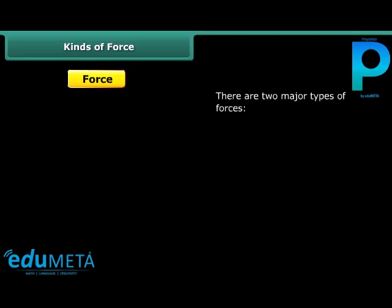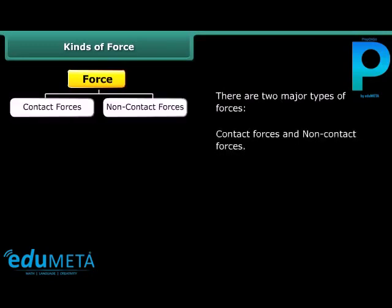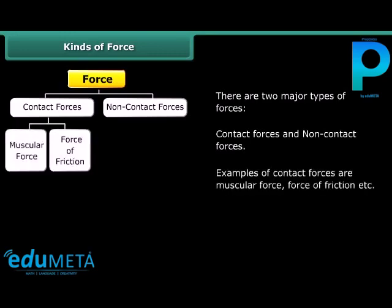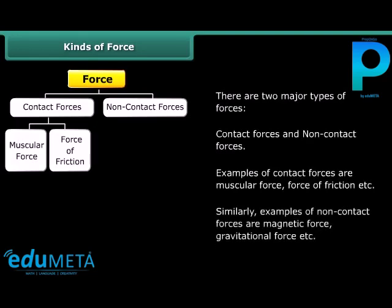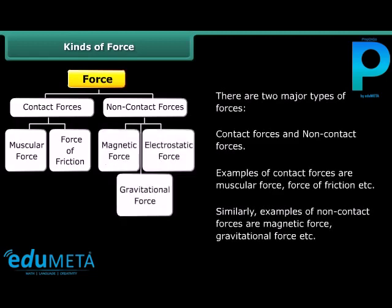Kinds of force. There are two major types of forces: contact forces and non-contact forces. Examples of contact forces are muscular force and force of friction. Similarly, examples of non-contact forces are magnetic force and gravitational force.